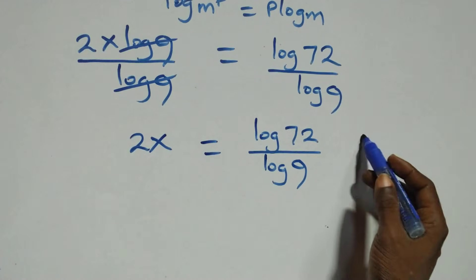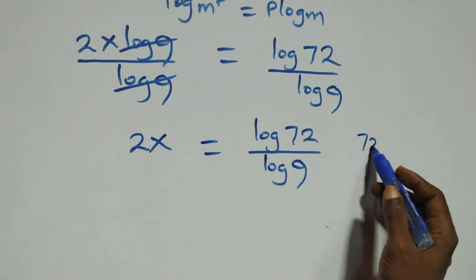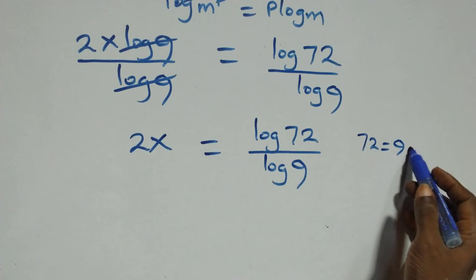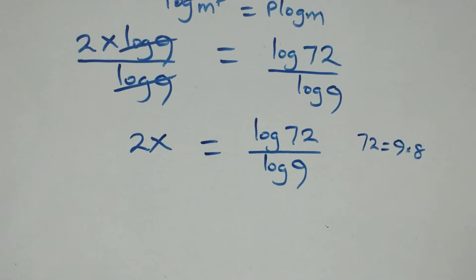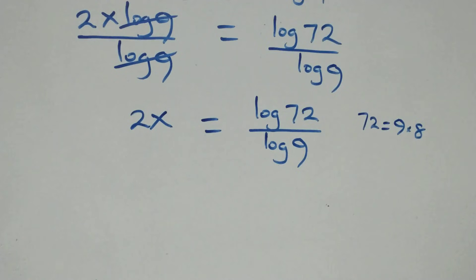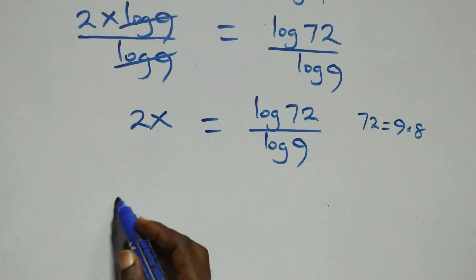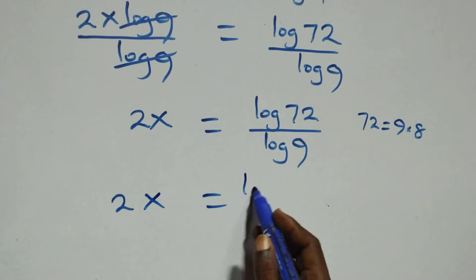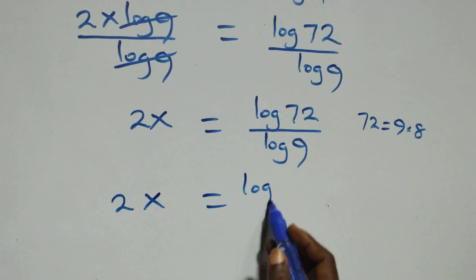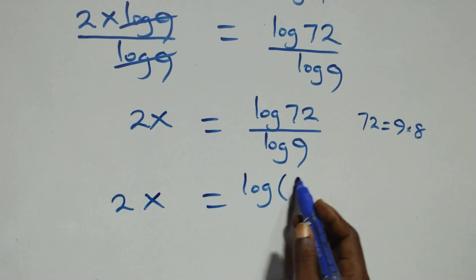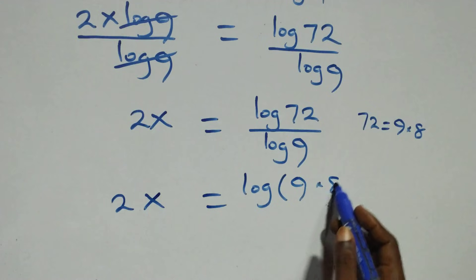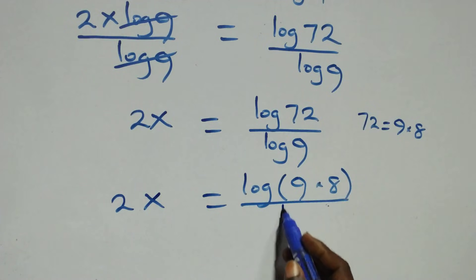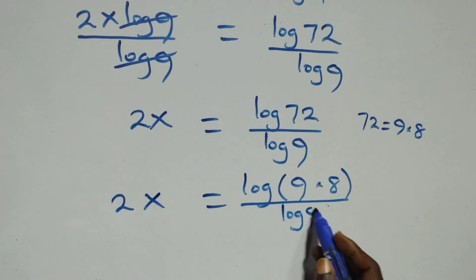From here, we can express 72 as 9 times 8. Then what we have becomes 2x equals to log(9 times 8) over log 9.